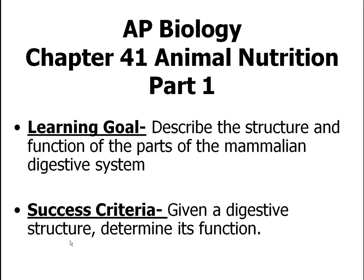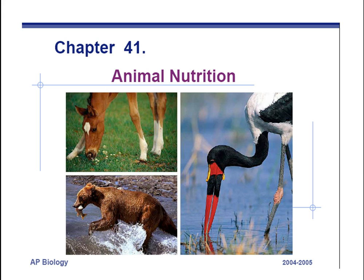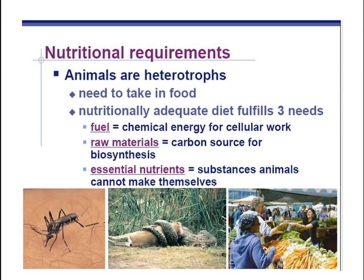AP Biology, Chapter 41, Animal Nutrition, Part 1. Today we're going to learn why animals eat — their nutritional requirements. Remember that animals are heterotrophs; they cannot make their own food. Hetero means 'other,' troph means 'feeder.' They need to take in food from another source.